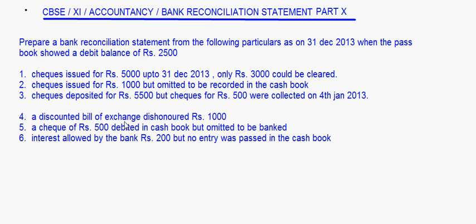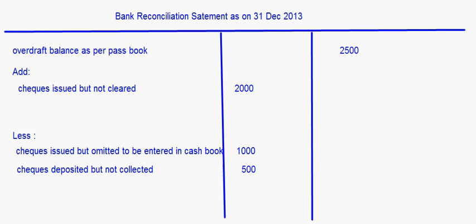A discounted bill of exchange dishonored Rs. 1,000. When the discounted bill of exchange is dishonored, as per the passbook the overdraft balance will go up by 1,000, whereas in the cashbook it will be less. So this should also be deducted. Bill of exchange dishonored: Rs. 1,000.